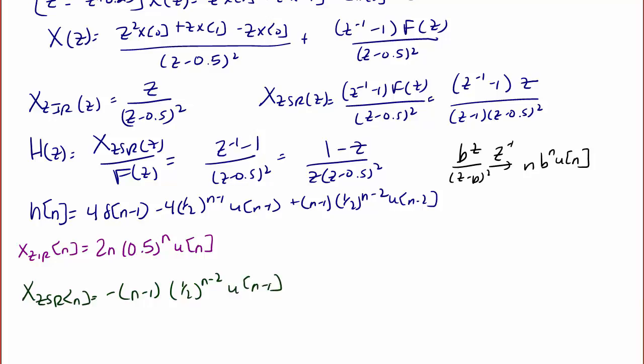Finally, our complete solution is when we put both of these together. We have x(n) = x_ZIR(n) + x_ZSR(n), which equals (1/2)^(n-2) times (1 - n/2) times u(n) plus δ(n).